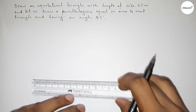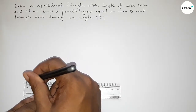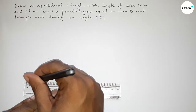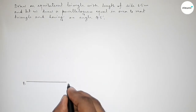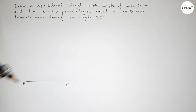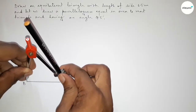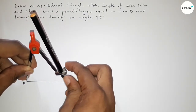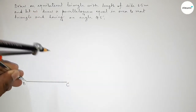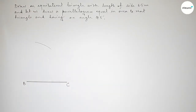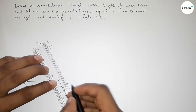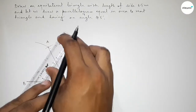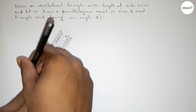First of all we draw the length 6.5 centimeters, marking points B and C. Taking the length using a compass and drawing an arc, then placing the compass on point C and cutting an arc so both curves intersect at point A.